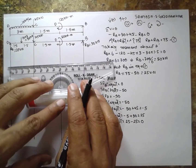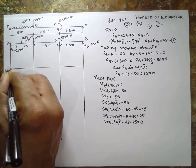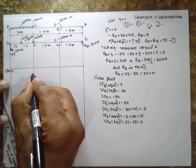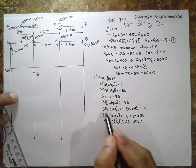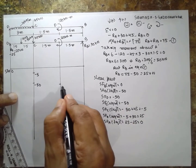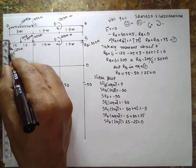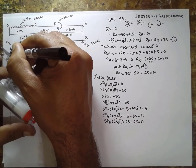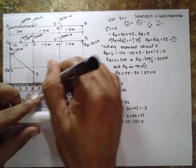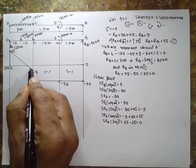Drawing the shear force diagram: at B it starts at 0, at A it is 25, at C (right) it is minus 5, at C (left) it drops to minus 50, at D it remains minus 50, and at B it returns to 0. Between A and C there is a UDL so an inclined line appears; between other points with no load, straight horizontal lines are drawn. The regions are: positive between A and the zero-crossing, then negative, and negative from C to B.